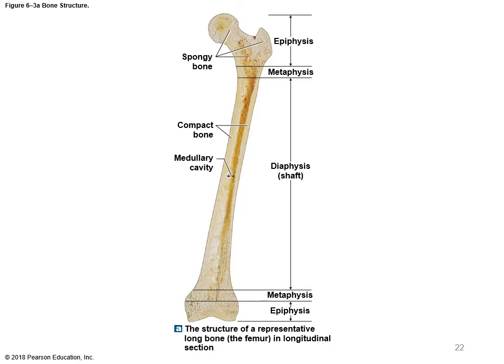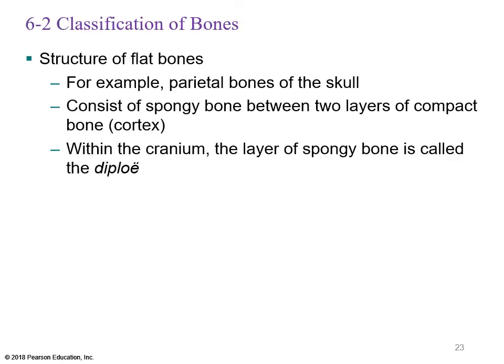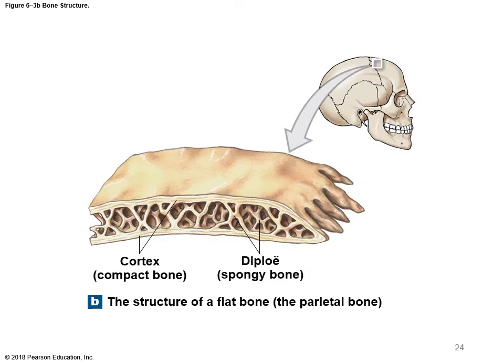On the femur image, the spongy bone at the top marks the epiphysis. In a growing bone, the metaphysis would contain cartilage — the growth plate. The epiphysis is the cartilaginous spongy bone region, and the metaphysis is where the growth plate existed between the epiphysis and the diaphysis. You have a distal metaphysis and distal epiphysis as well. Flat bones like the parietal bones of the skull consist of spongy bone (called diploë in the cranium) sandwiched between two layers of compact bone called the cortex.